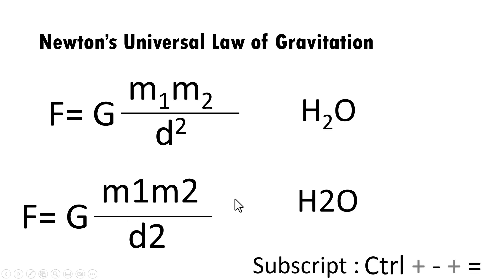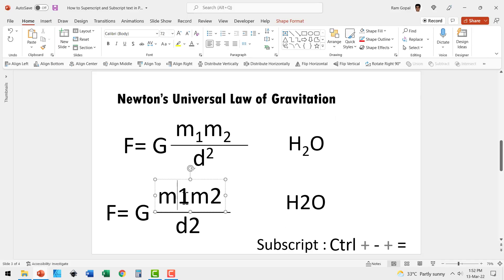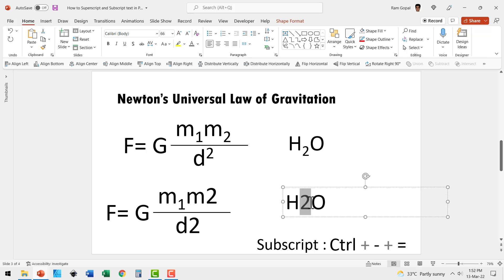And then we use the shortcut Control+Equals. Let me show you here. I'm going to select this text here Control+Equals, and that immediately changes that into a subscript. The same way if I have to select this, do the same thing Control+Equals. It is converted into a subscript.